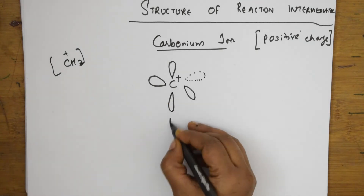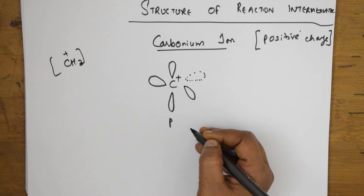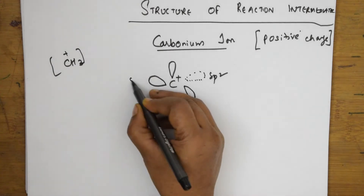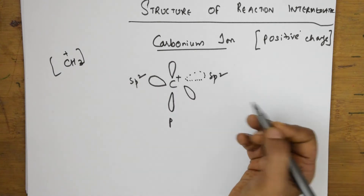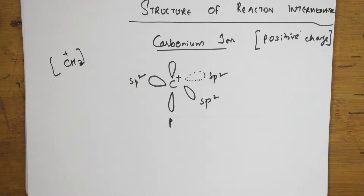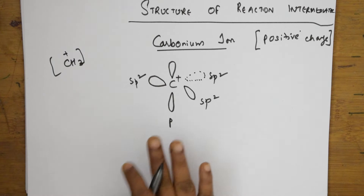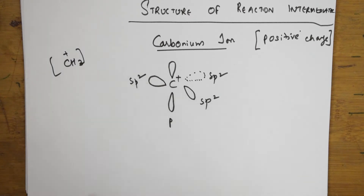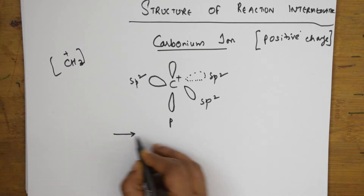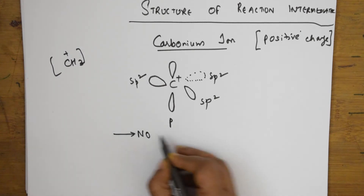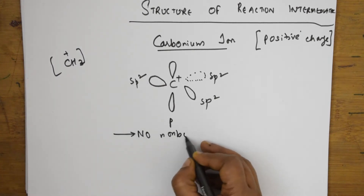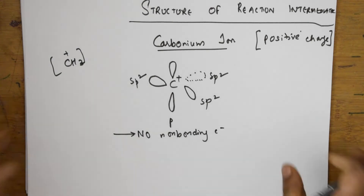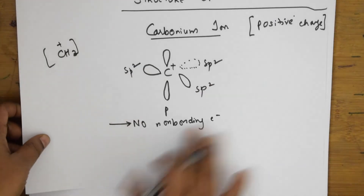In the case of CH3+, there is one vacant P orbital. This is SP2 hybridized. The first important characteristic: are there any non-bonding electrons? No. The first characteristic is that carbonium ion has no non-bonding electrons.